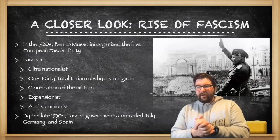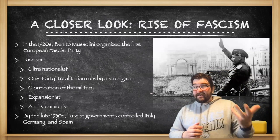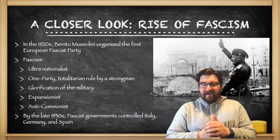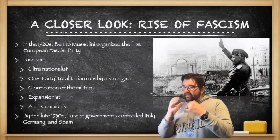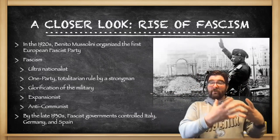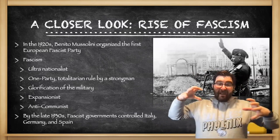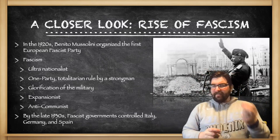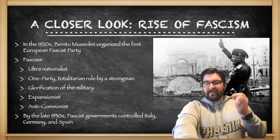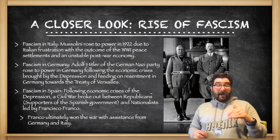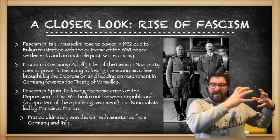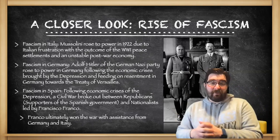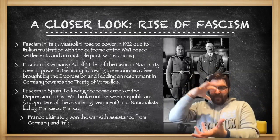We're also going to see in the post-World War I and Great Depression years the rise of fascism in Europe, starting in the 1920s in Italy with Benito Mussolini organizing the first European fascist party. Fascism as an ideology is ultra-nationalist — a one-party totalitarian state ruled by a strongman. There's glorification of the military and war, fascism is expansionist, and anti-communist, seeing communism as an internationalist ideology. By the late 1930s, fascist governments would control Italy, Germany, and Spain. Fascism in Italy came with Mussolini's rise to power in 1922, as he took Italian frustrations with the Paris Peace Conference outcomes and an unstable post-war economy to unite a very divided Italy.